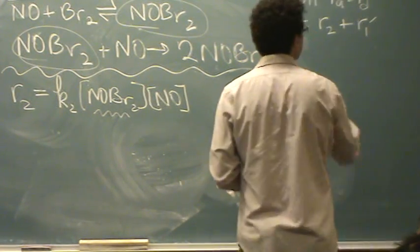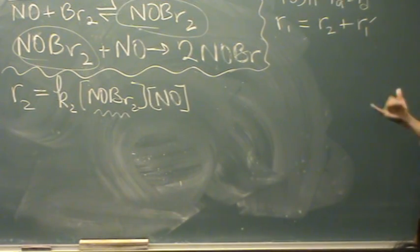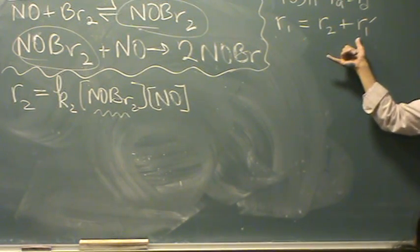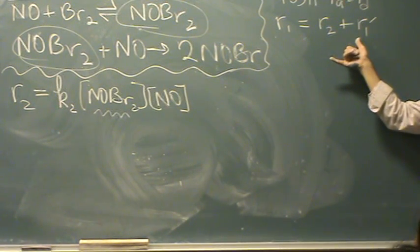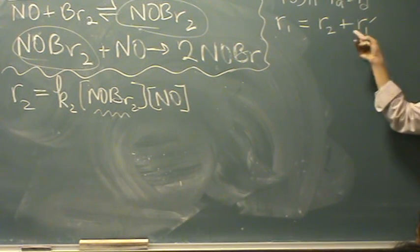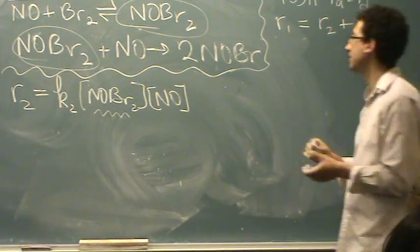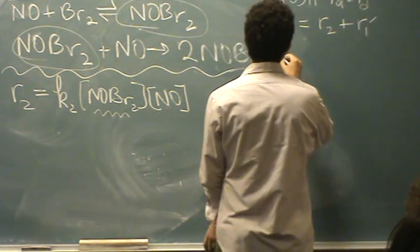So now we're going to use this equation. I don't know if you remember, when we solved this using the case 2 sort of analogy, we said rate 1 equals rate 1 reverse. Do you remember that? We did that in class. And now you can see that's an assumption. Actually, rate 1 equals rate 2 plus rate 1 reverse. So this is a better assumption than saying that rate 1 equals rate 1 reverse. Okay? It's a slightly better assumption. Alright, now let's plug in stuff.